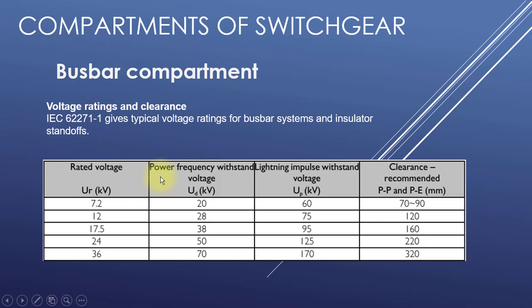Let's discuss voltage rating and clearances. IEC 62271-1 gives typical voltage ratings for bus bar systems and insulator standoffs. In the table you can find rated voltage, power frequency withstand voltage, and lightning impulse voltage. The lightning impulse voltage in kilovolts is recommended as per the IEC standard, especially for the bus bar system and the isolators. This must be adopted and tested during the type test, and these values are also mentioned on the nameplate of the switchgear.